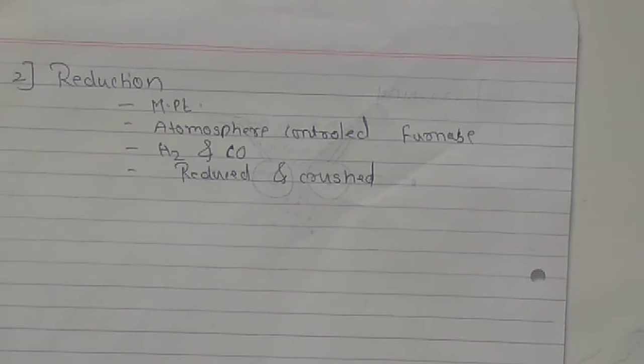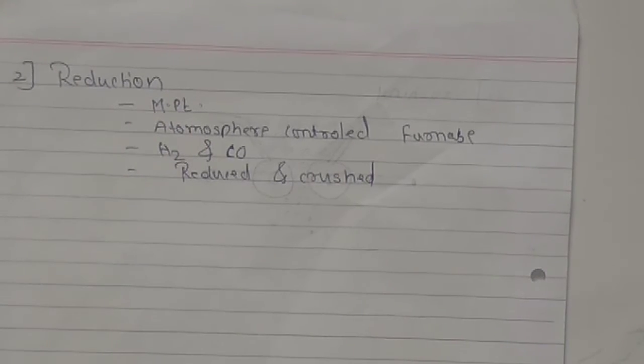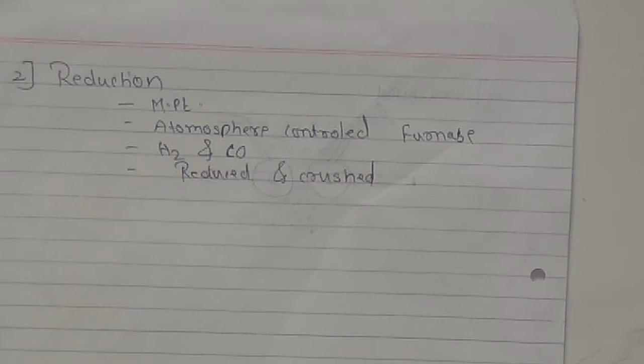The second method for metal powder production is reduction. In this case, the metal ore is crushed and then mixed with another material, usually carbon. Once the mix is complete, it is put through a furnace to create a reaction that lowers the oxygen and carbon levels in the powder. It requires ore of relatively high purity to get a desirable final product.